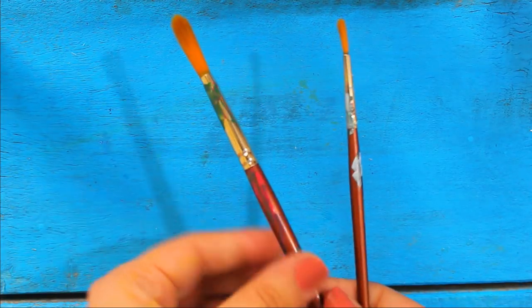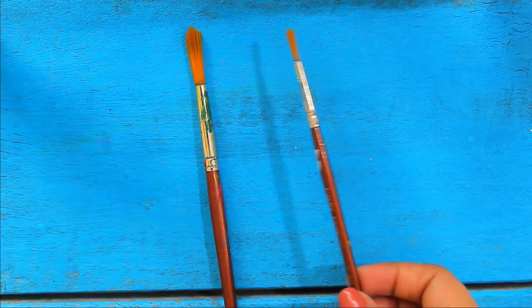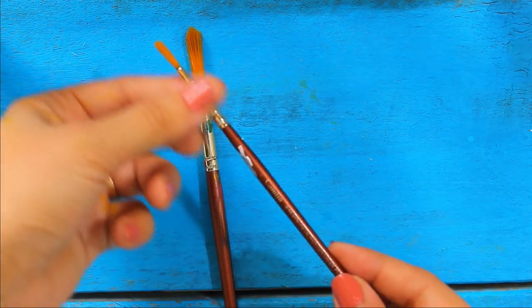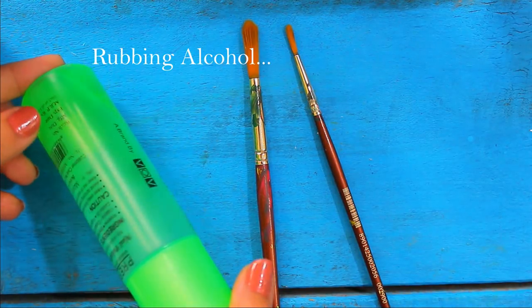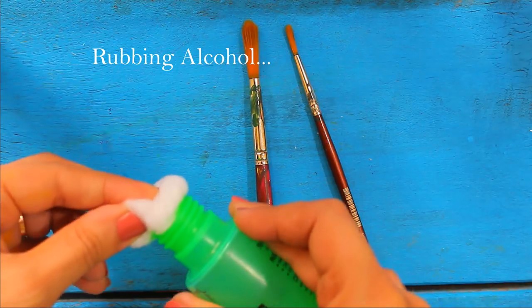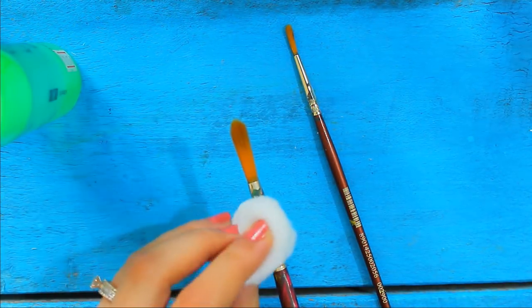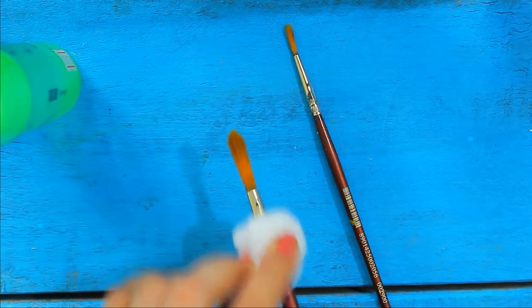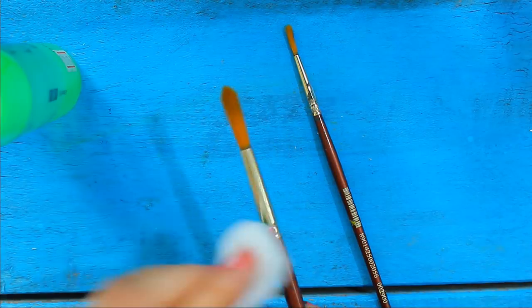Now let's clean the handle of the brush which gets stained with paints while coloring. If your brushes also become something like this, then take rubbing alcohol or nail paint remover and use cotton for applying it. Rub it on the area that has paint, and you will see all the color is coming out on the cotton.